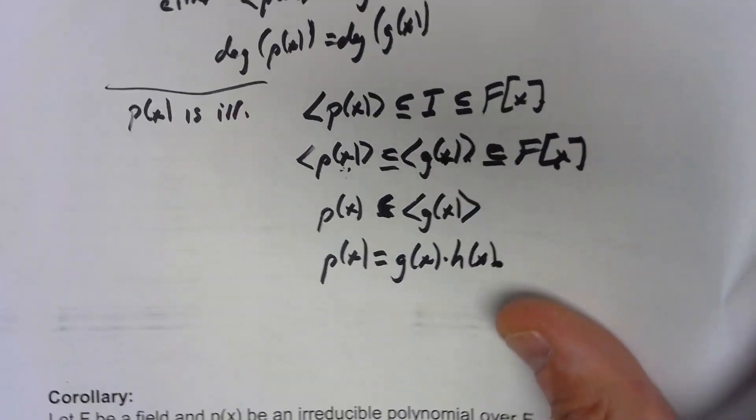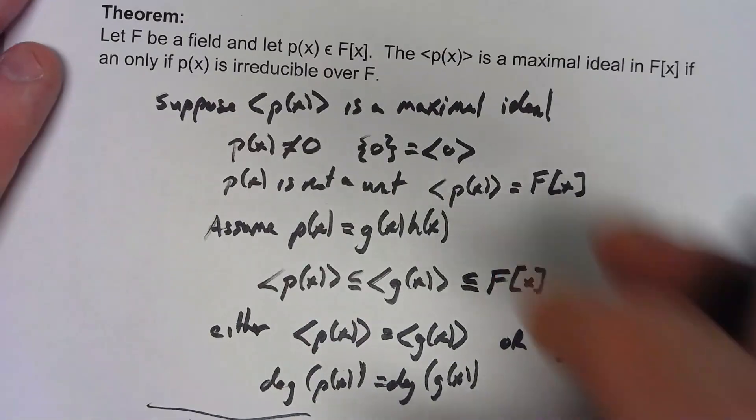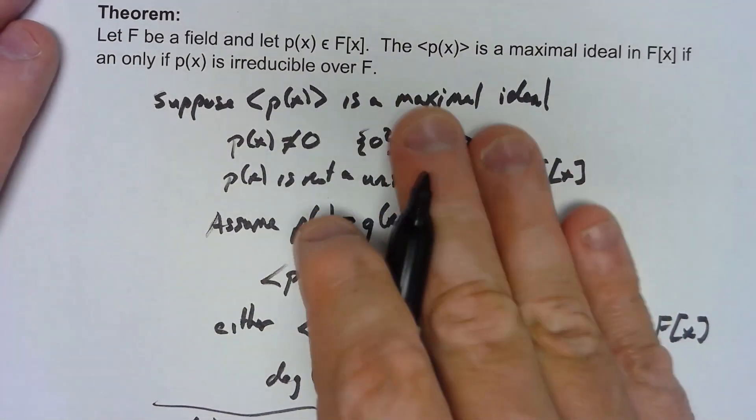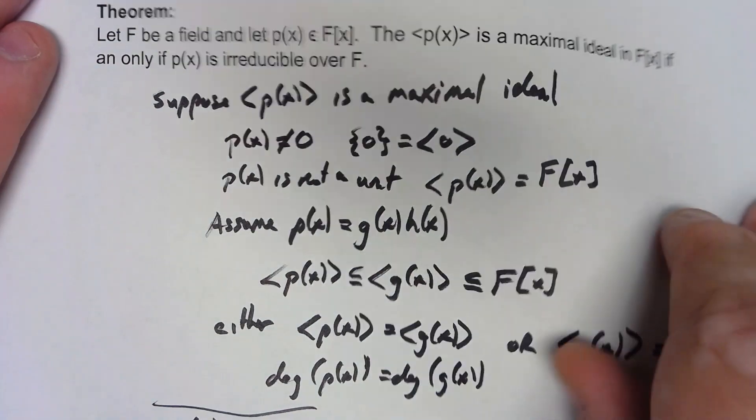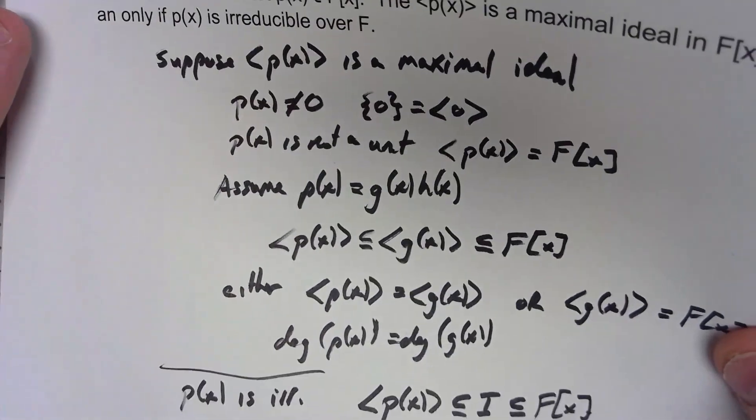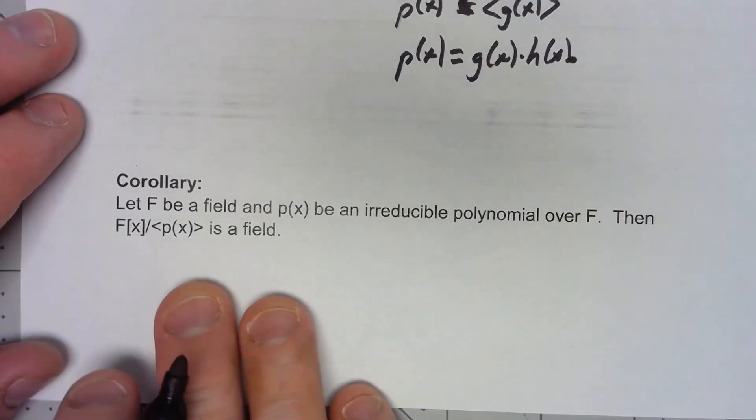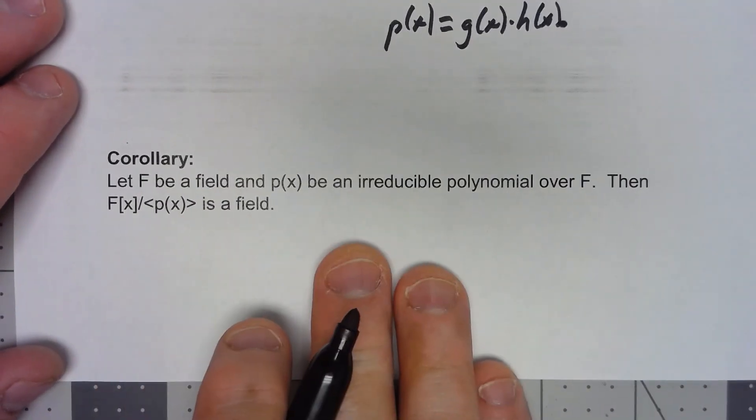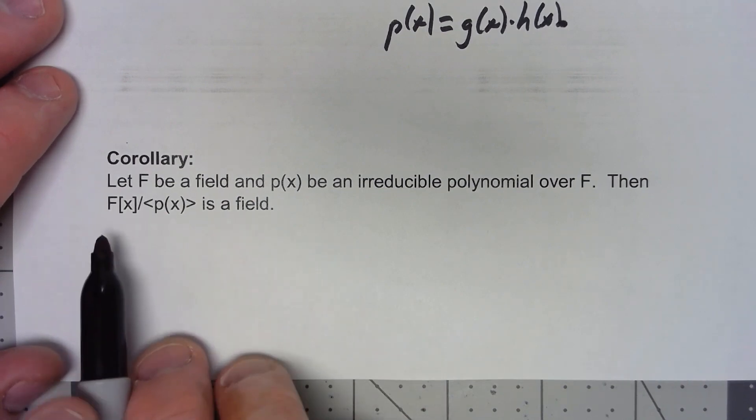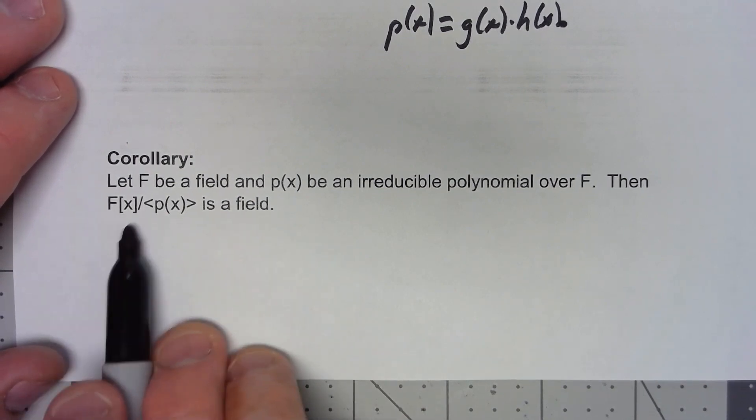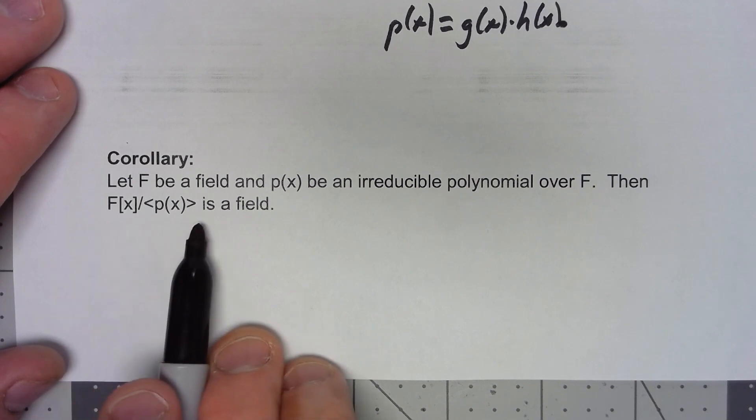Now, I don't know if this one is all that important by itself, but there's a very simple corollary that is very interesting. Suppose we've got a field and then we've got an irreducible polynomial. Then when I create that factor ring for the polynomial ring, based on the ideal generated by that polynomial, I get a field.